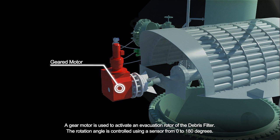A gear motor is used to activate an evacuation rotor of the debris filter. The rotation angle is controlled using a sensor from 0 to 180 degrees.